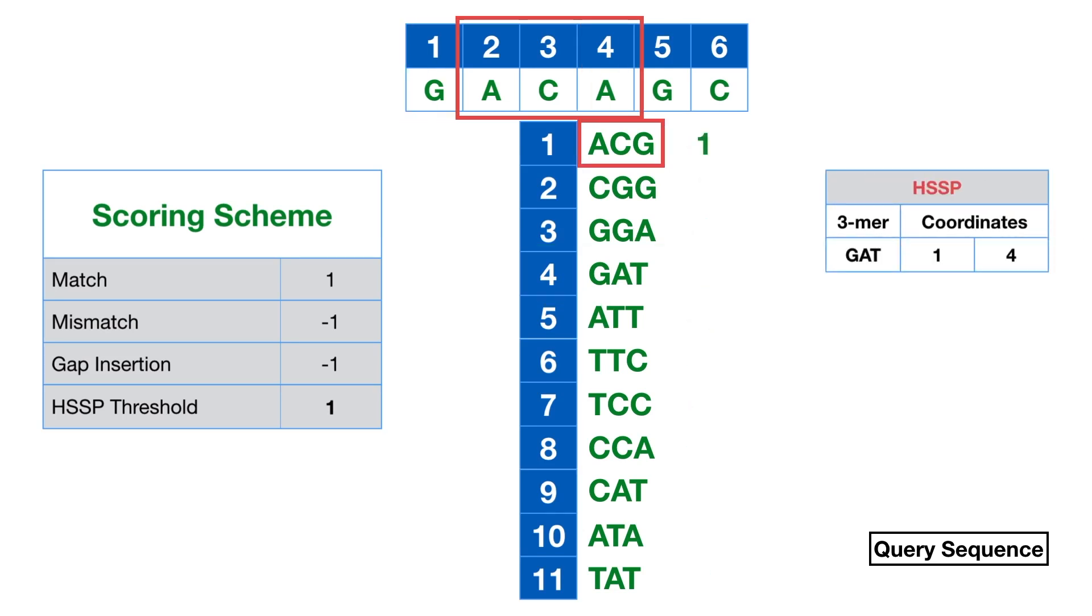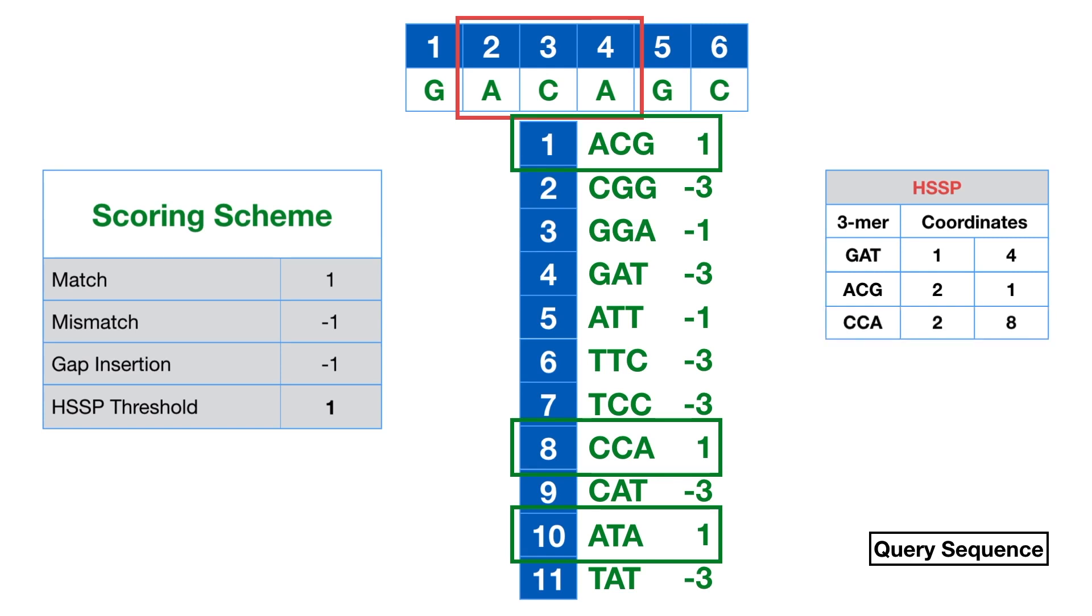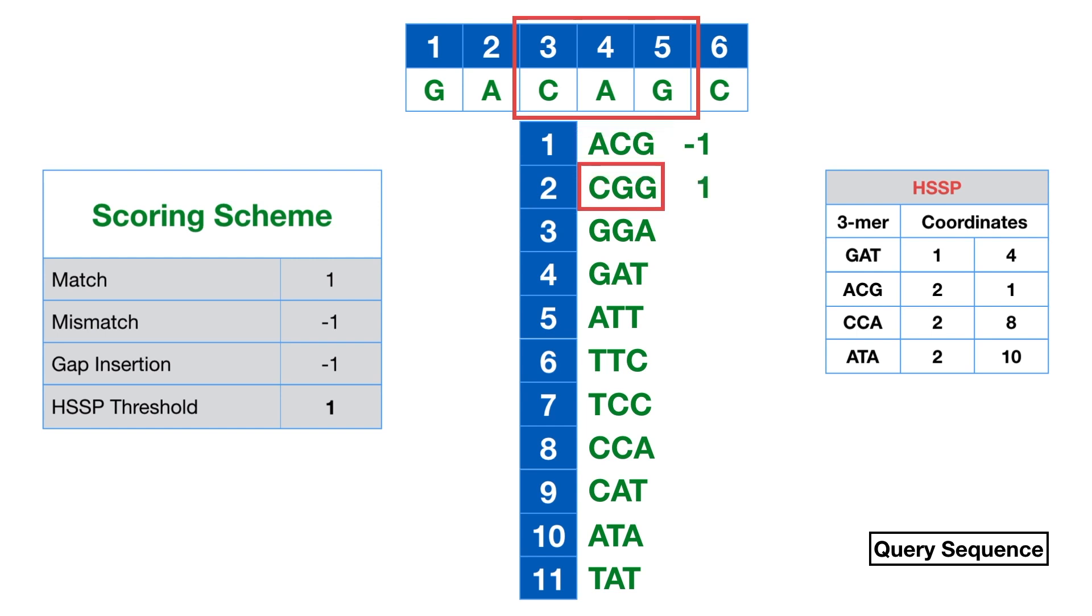We repeat the process with a second K-mer in the query sequence. This time, we find 3 HSSPs in the 1st, 8th, and 10th position of the indexed sequence. These are the scores for the 3rd K-mer in the query sequence. Two new HSSPs are found, this time with the 2nd and 9th K-mer in the indexed list. We add them to the table of HSSPs.